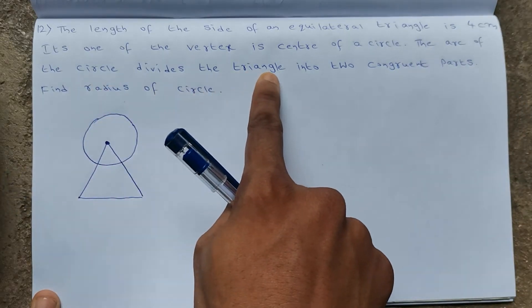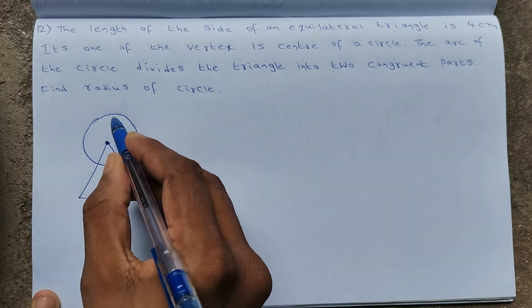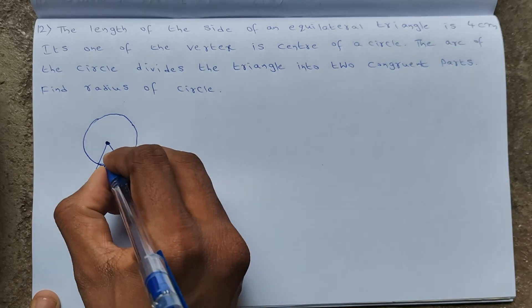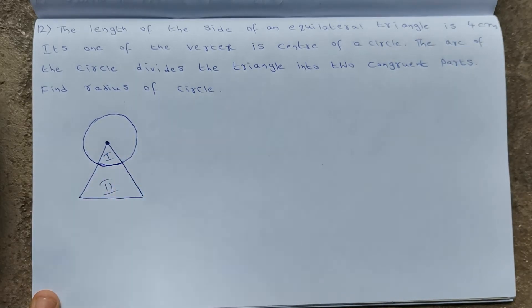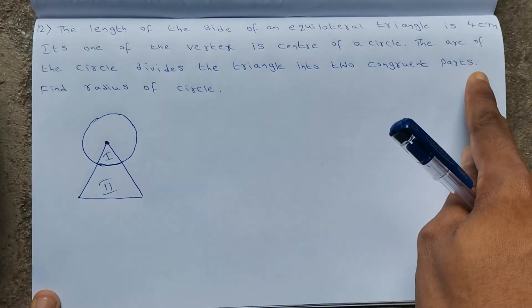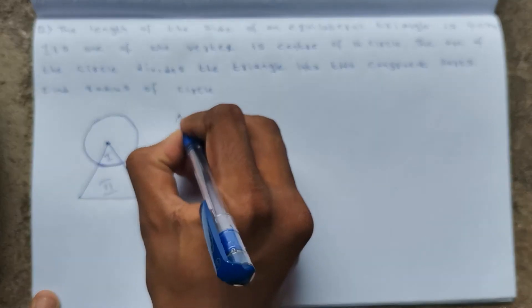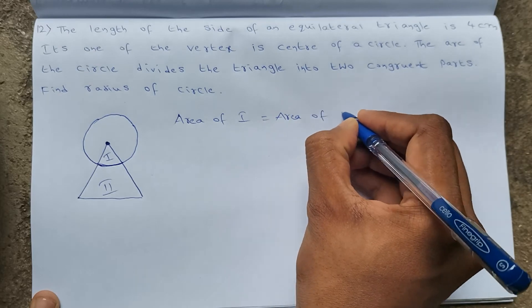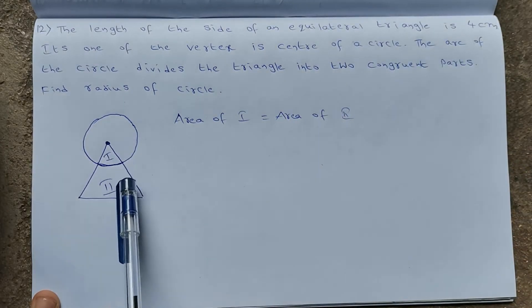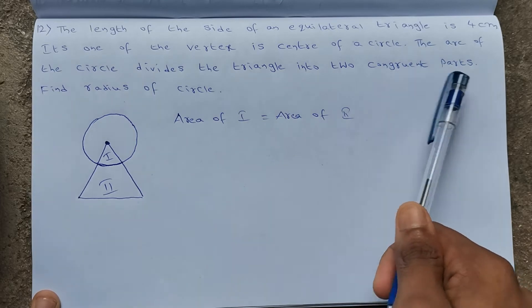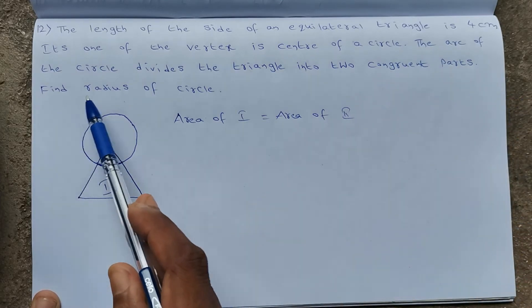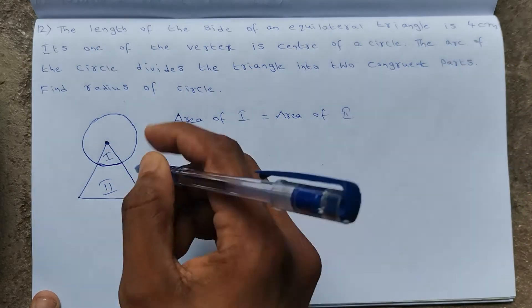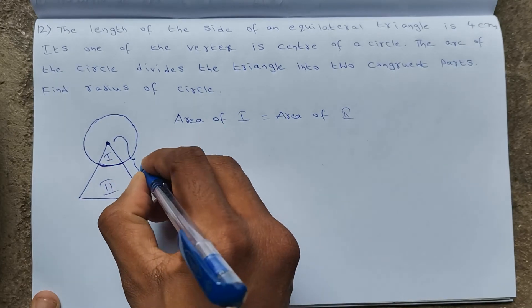The arc of the circle divides the triangle into two congruent parts. The arc divides the total triangle into two pieces, and those two are congruent parts — meaning the area of the first part exactly equals the area of the second part. The side of the equilateral triangle is 4 centimeters.